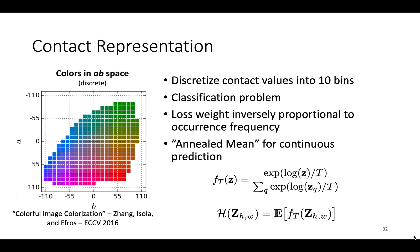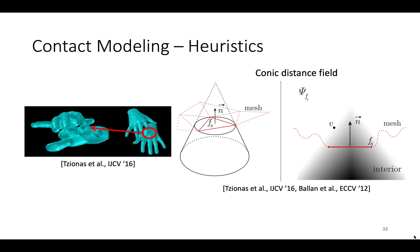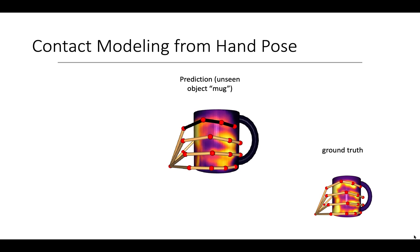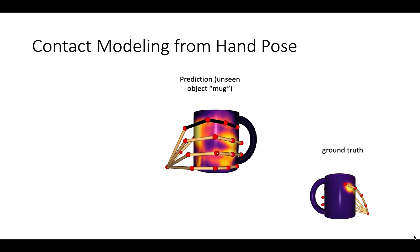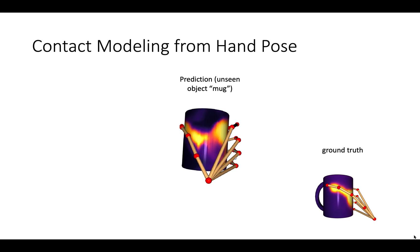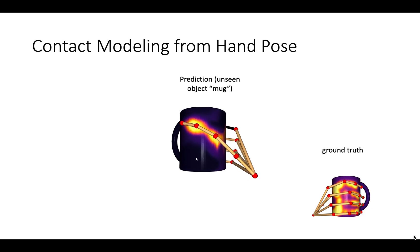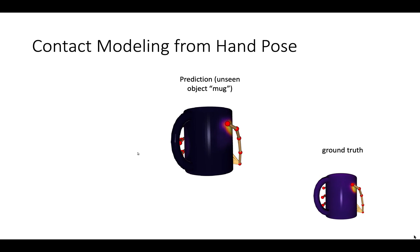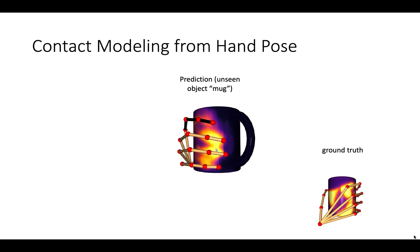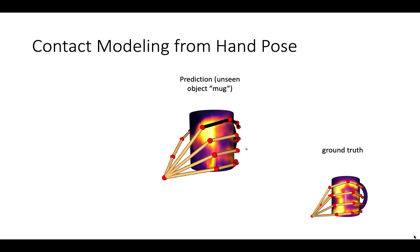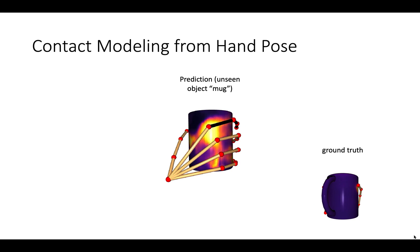And at test time, we used the annealed mean as the continuous prediction. This was compared to a simple but powerful heuristic, which uses the penetration depth inside the conic distance field of object mesh faces as a proxy for contact. Here's an example contact prediction from our model that uses skeleton features. Black indicates that all features for those phalanges were zeroed out to simulate imperfect hand pose.